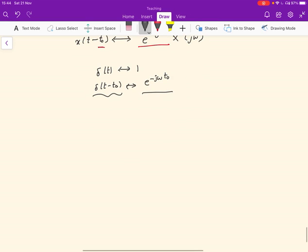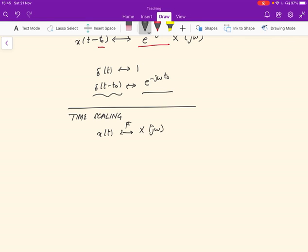The other property is called time scaling, which says that if x(t) corresponds to, with the Fourier transform to X j omega, to X j omega,